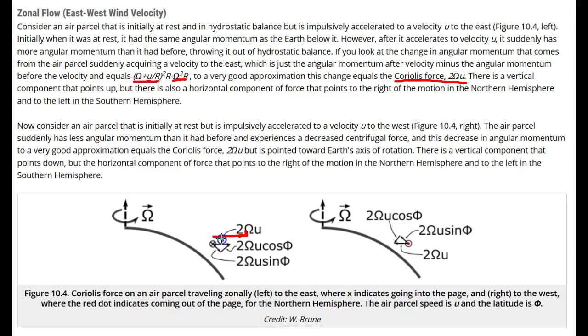Thus, the Coriolis force turns the air parcel to the right for zonal flow. If the air parcel moves to the west, then by the same argument, the Coriolis force points towards Earth's rotation axis in the northern hemisphere, which again turns the air parcel to the right.